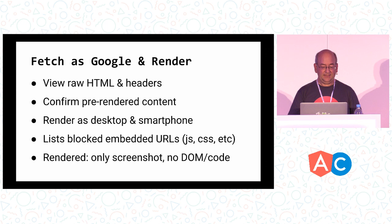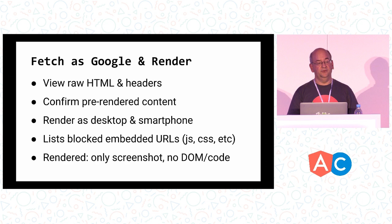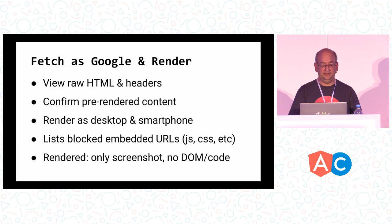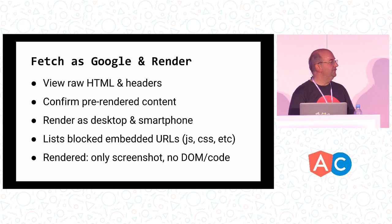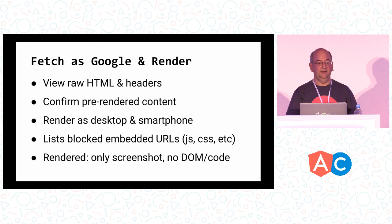The most important tool for you is probably Fetch and Render in Search Console, where you send Googlebot to a URL you specify, and it tries to render the page and show you what it looks like. This is a great way to confirm that your pre-rendering is working well. You can test it with smartphone and desktop user agents to check mobile rendering, and it lists URLs blocked by robots.txt so you can spot if you're accidentally blocking an API or external resource. Note that for rendering, we show you a screenshot, not the full DOM.